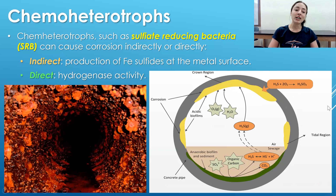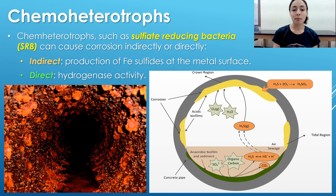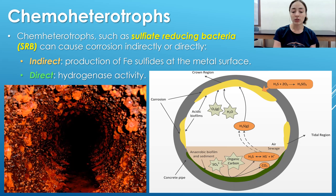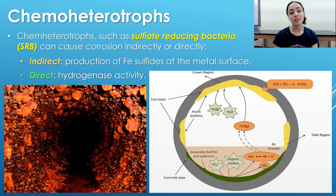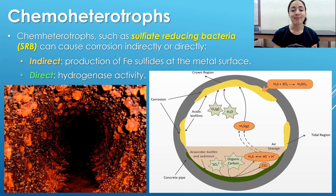Moving on to the second group: chemoheterotrophs. Unlike the oxidizing bacteria we just discussed, we're now talking about reducing bacteria. The first and most prominent on the list are sulfate-reducing bacteria, abbreviated SRB. These SRB can cause corrosion either indirectly or directly.